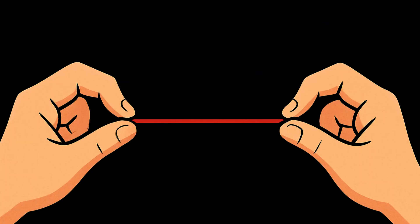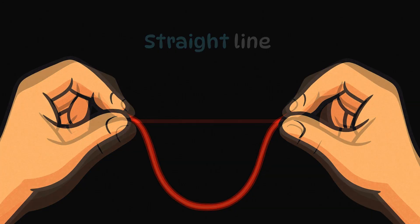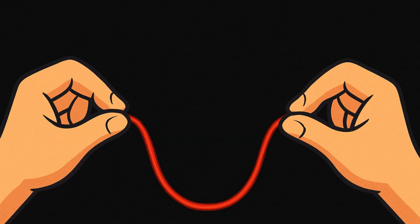When you stretch a thread tight like this, it makes a straight line. And when you let it go loose, it turns into a curved line.